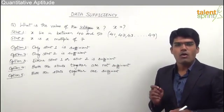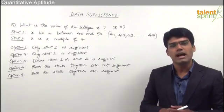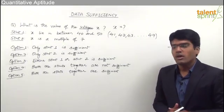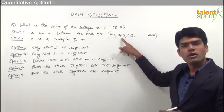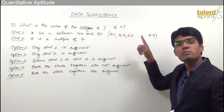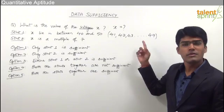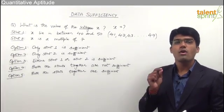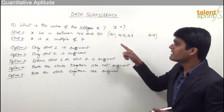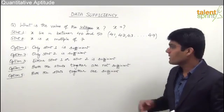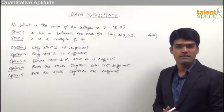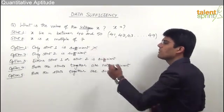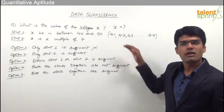An important point in data sufficiency is that we should be able to find a unique answer from the given statements — only then we say the question can be answered, otherwise it cannot be answered. From statement one we know x can be 41 or 42 or 43 up to 49, giving us 9 possible values. We are not able to find one particular unique value of x, so statement one is insufficient to answer the question. It gives many possibilities but not a unique value, so option one cannot be our answer.